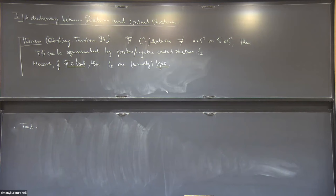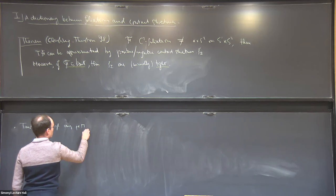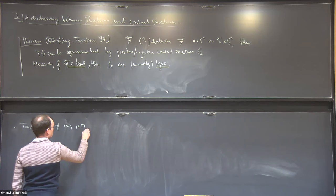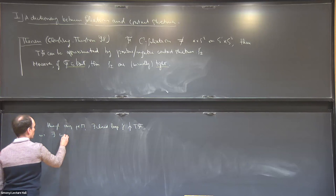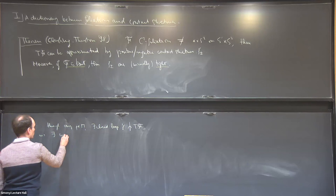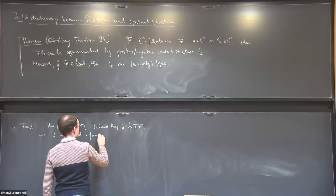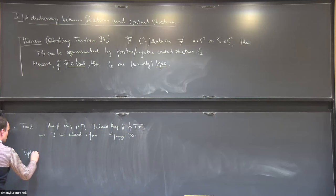Let me briefly recall taut foliations. There are many equivalent definitions. A common one is that through any point p in M there exists a closed loop gamma transverse to TF. Maybe a better way from the symplectic point of view: there exists omega, a closed two-form, which is positive when restricted on the leaves.